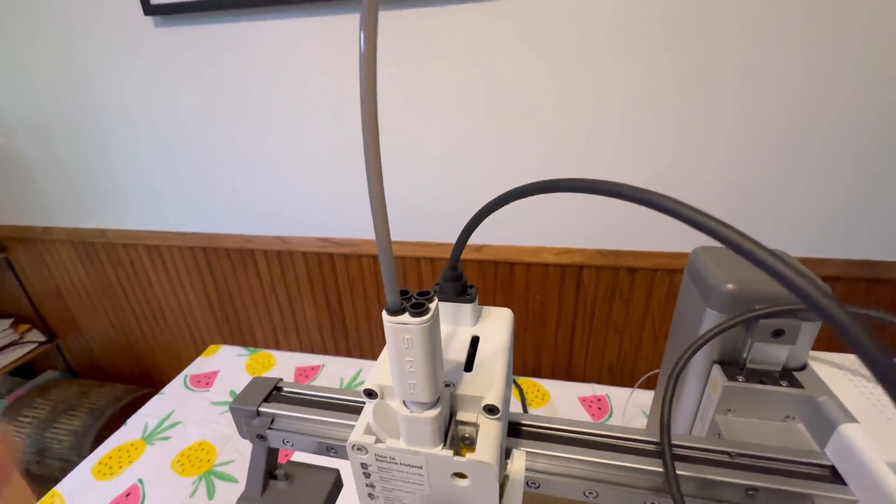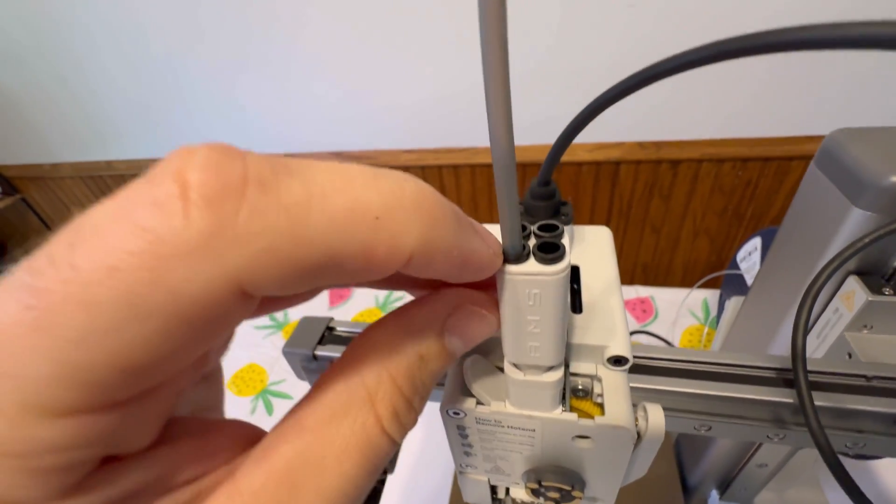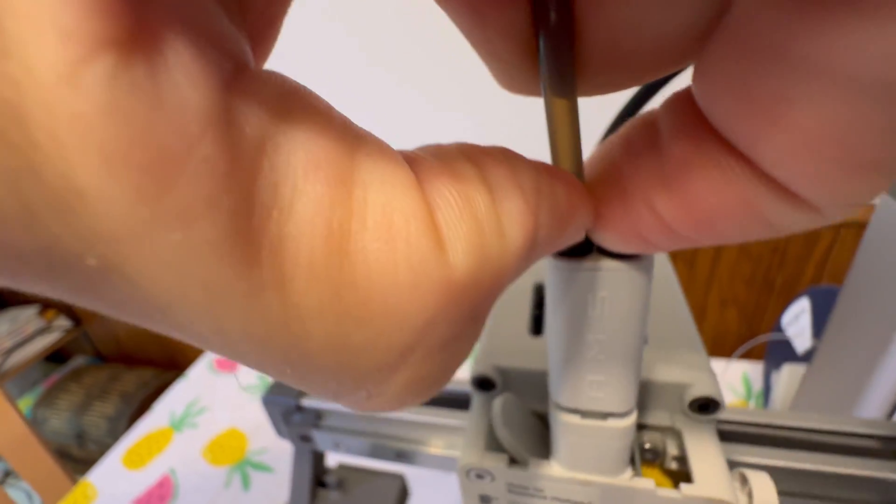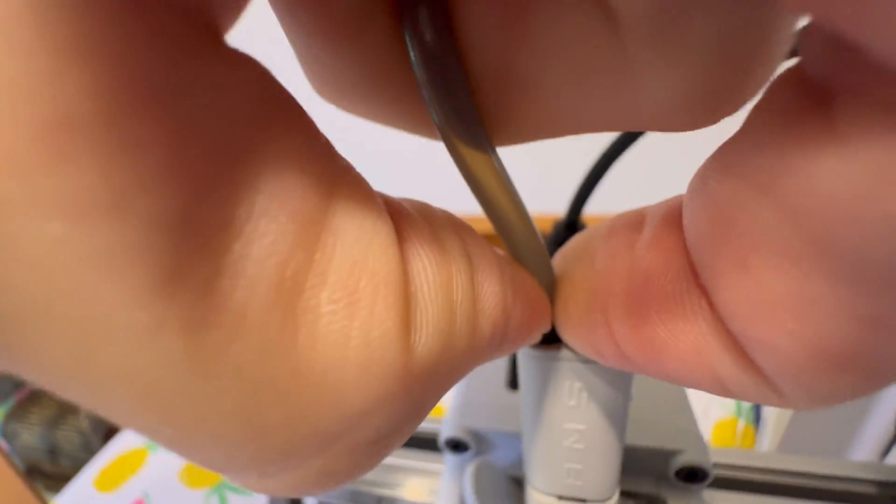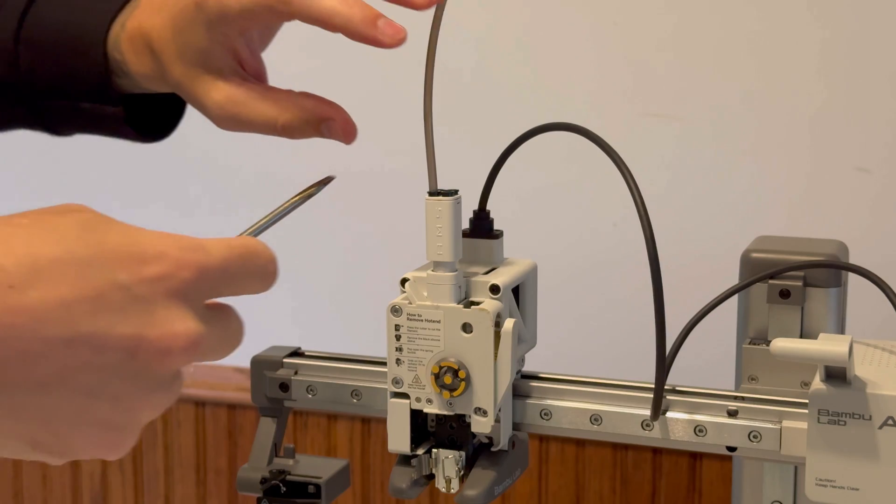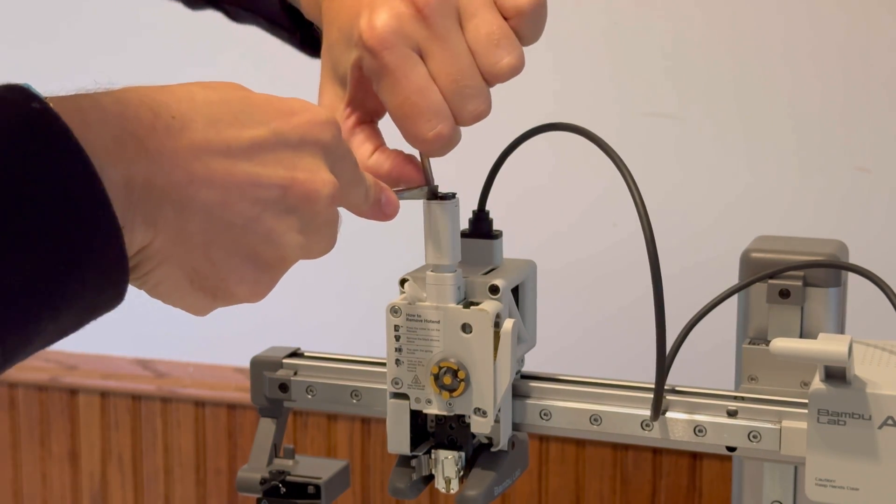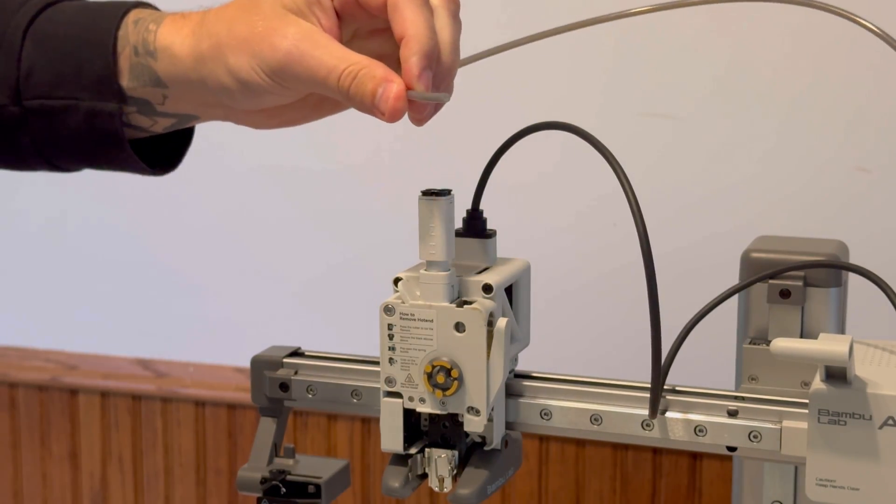So first what you need to do here is we need to remove this PTFE tube from this little insert right here. All you have to do is kind of push down on both sides of this and it should kind of just pull out. What you can do is use a tweezers or like a screwdriver just be very gentle you don't want to wreck these. Just pull down on both sides of it and it should come right out.